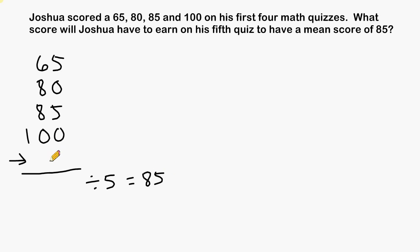So we just have to figure out what this fifth score is. So when we get a total and divide by five, it will give us exactly 85.